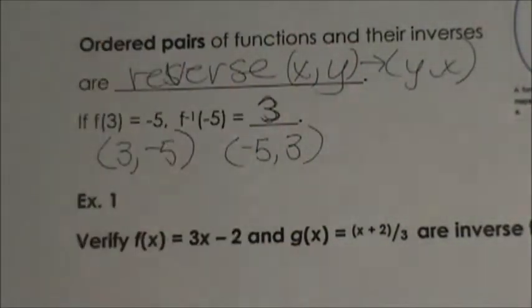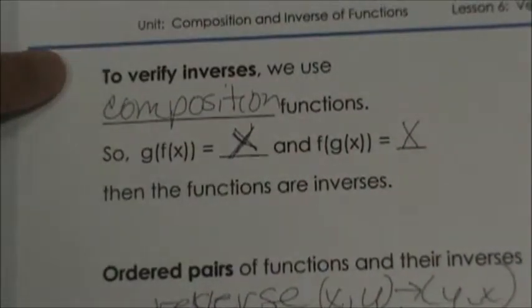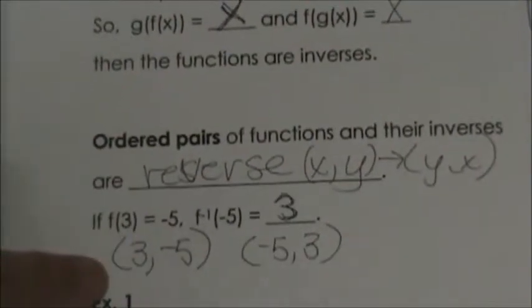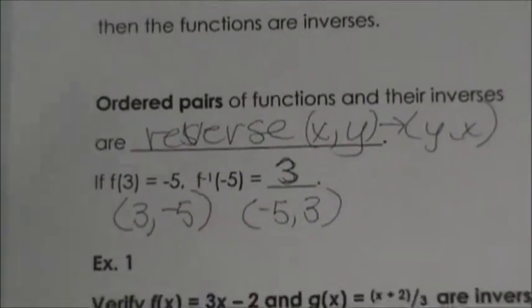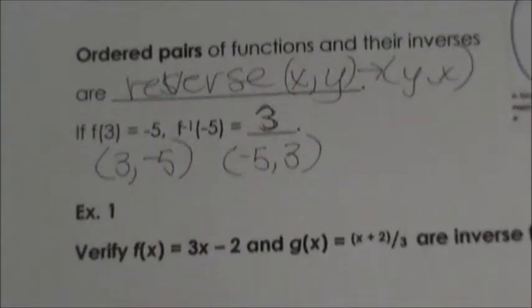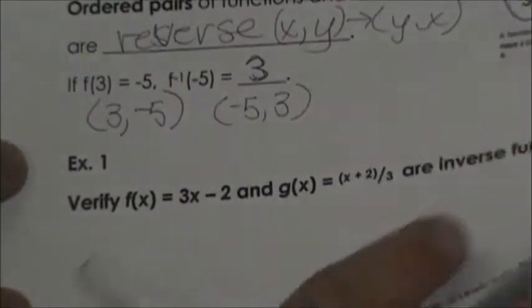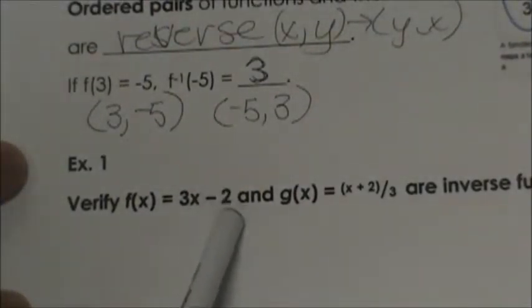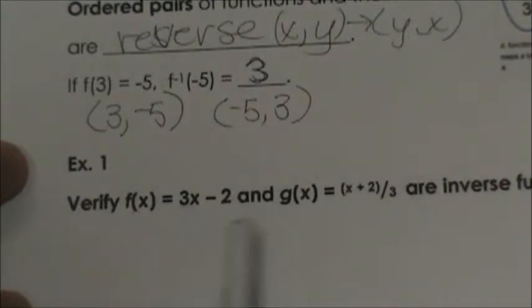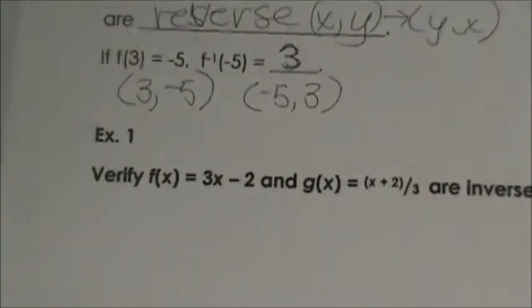So those are the two main concepts today: using compositions to verify, and knowing what the ordered pairs should look like when you look at the inverse and its function. Let's start off with this pair. We are going to verify that 3x minus 2 and (x plus 2) over 3 are inverses of each other using composite functions.